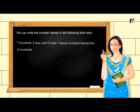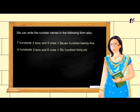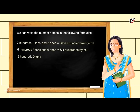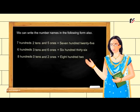Six hundreds, three tens, and six ones is equal to six hundred thirty-six. Eight hundreds, zero tens, and two ones is equal to eight hundred two.